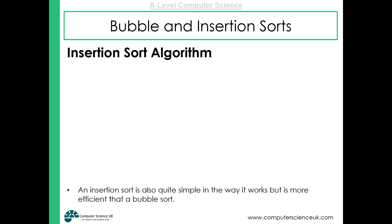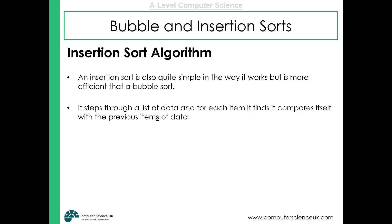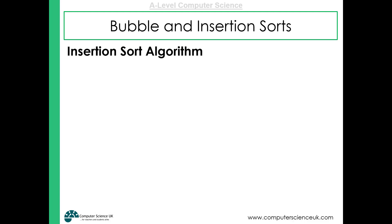The insertion sort is also very simple in how it works. It is a little bit more efficient than a bubble sort, certainly for smaller sets of data, even though the Big O notation is exactly the same. What it does is step through a list of data, and for each item it finds, it compares it with the previous items. If it's greater than the previous item, it stays where it is. If it's smaller, it's compared with items before that, and then inserted into the correct position.